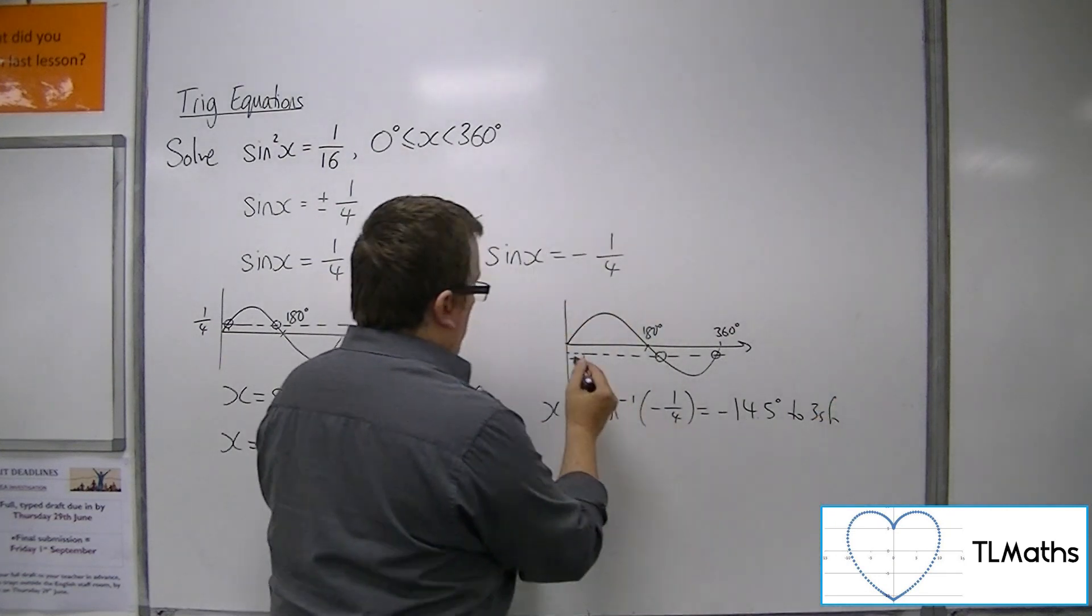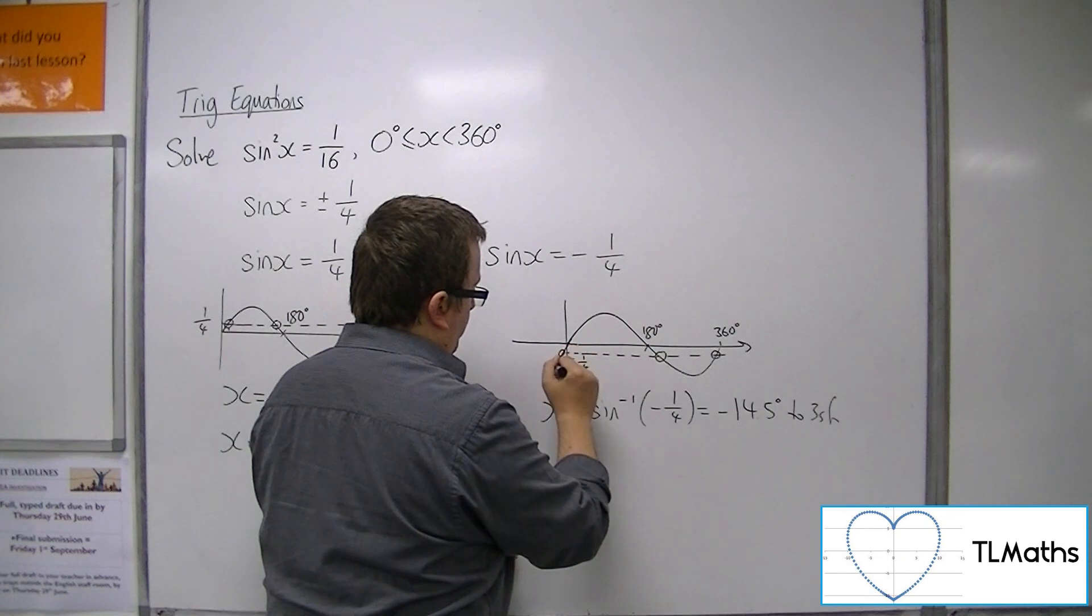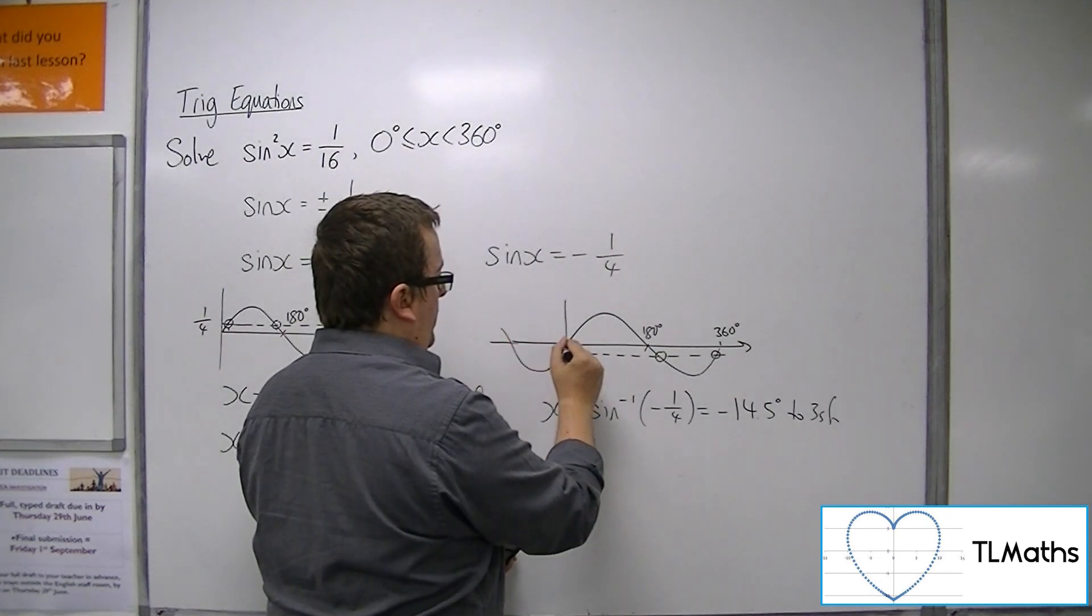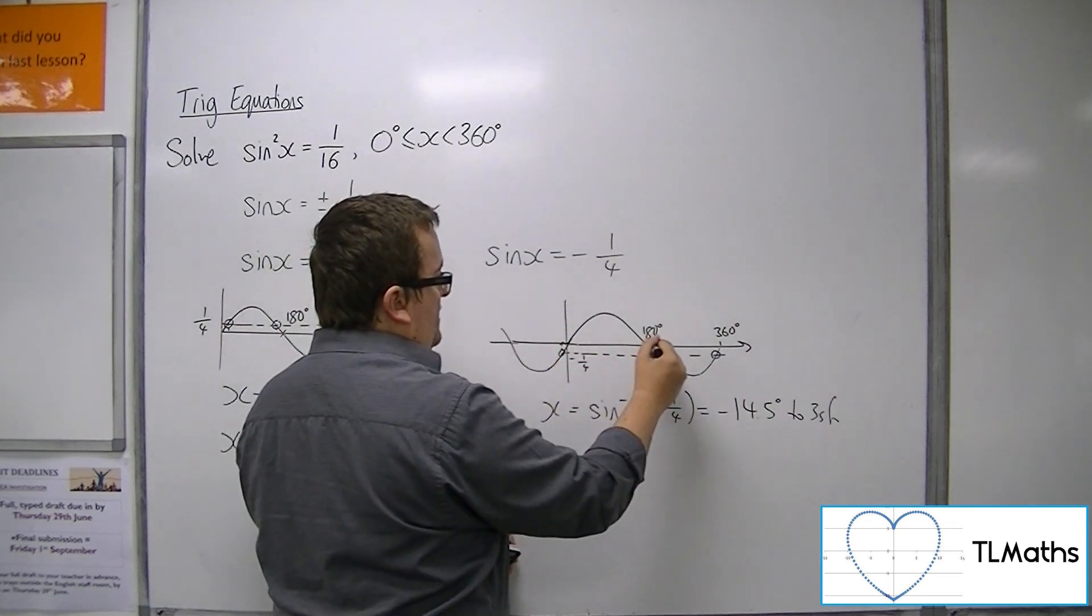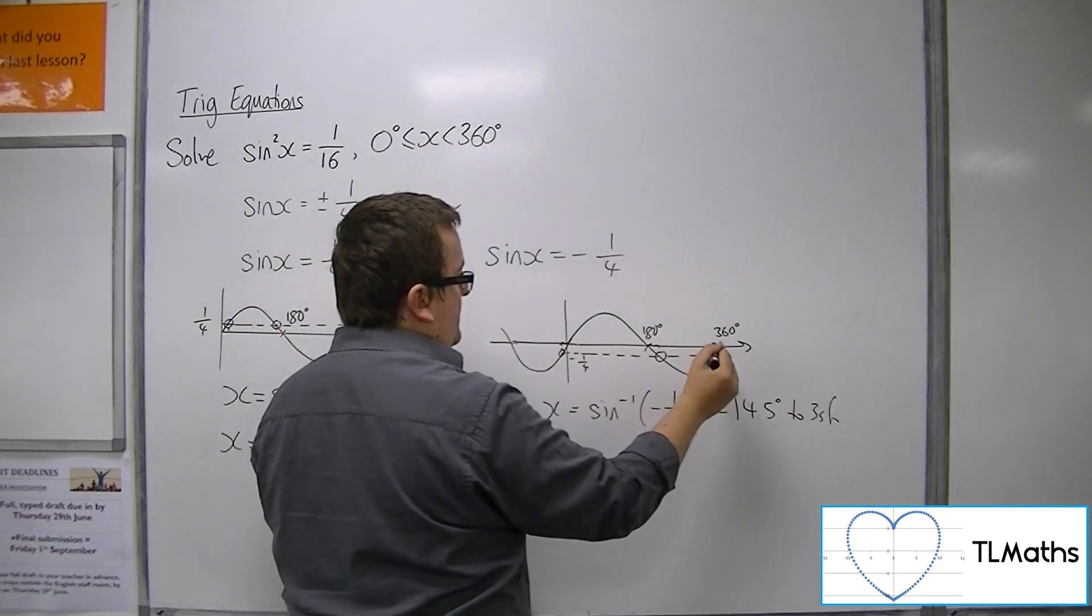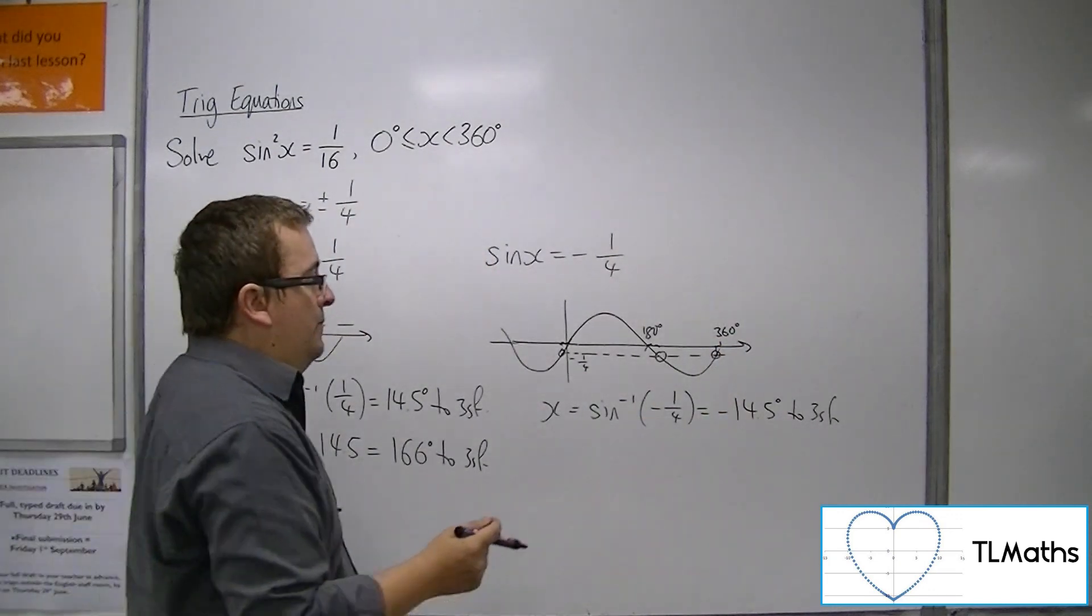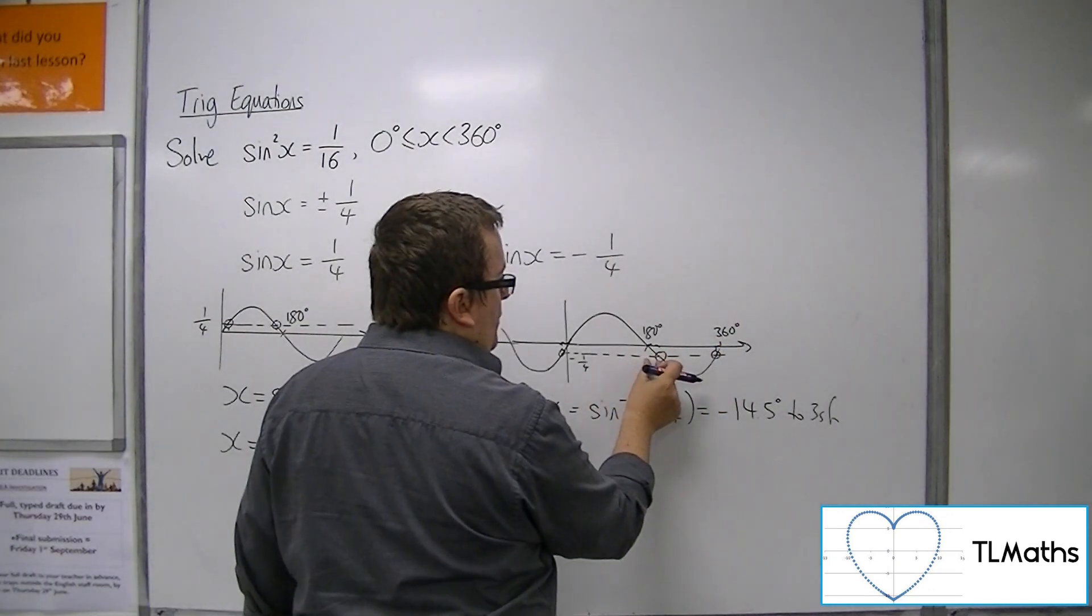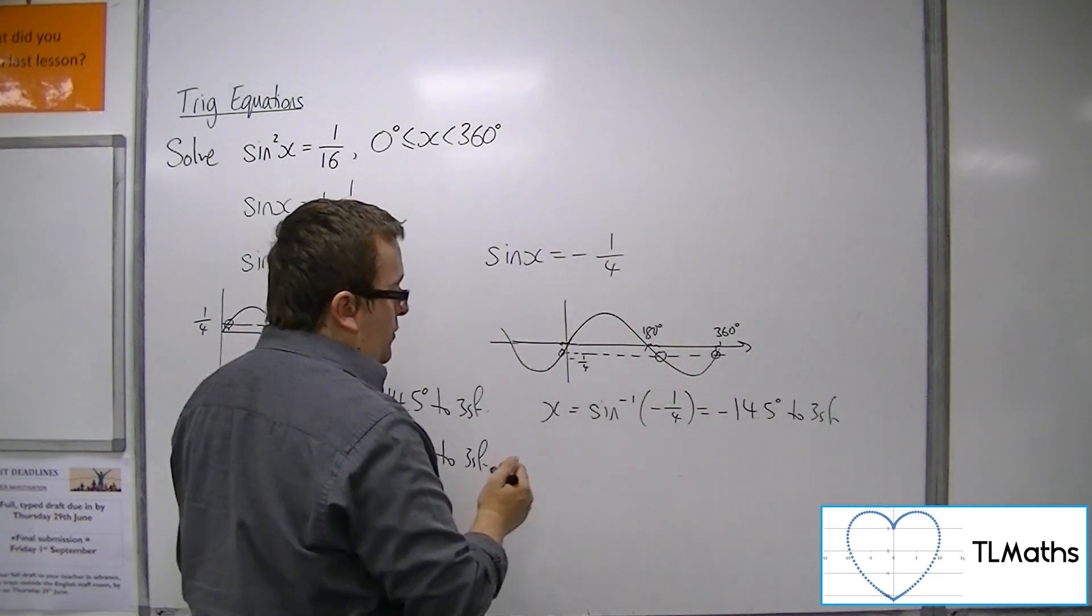Now, the problem here is that it's giving you this solution. Obviously, the sine curve continues, so we've actually got that solution there. So that distance is actually the same as that distance there, and the same as that distance there. So if I add 14.5 to 180 and I subtract 14.5 from 360, it'll give me the two solutions that I want.